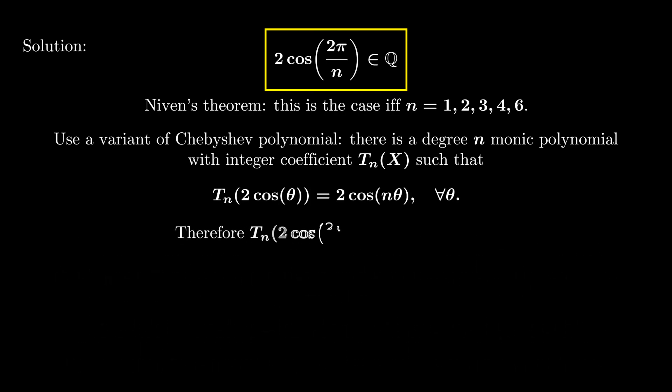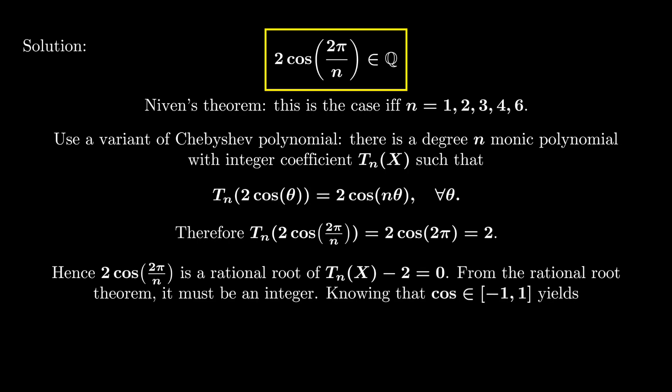Therefore, Tₙ(2 cos(2π/n)) equals 2. This means the number 2 cos(2π/n) is a rational root of Tₙ - 2. And from the rational root theorem, since Tₙ is monic, all the rational roots are integers. On the other hand, we know that cosine lies between -1 and 1. So the only possibilities to make 2 times cosine something to be an integer is -1, -1/2, 0, 1/2, and 1. And these are exactly n equals 1, 2, 3, 4, and 6.